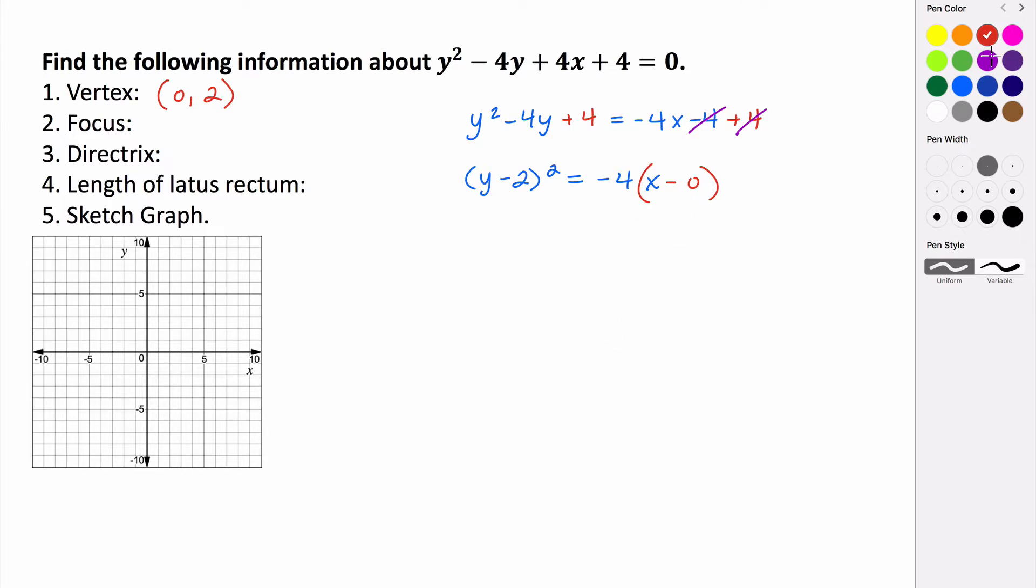The focus... So we know that the focus is just a units away from our vertex. And we know that this value here is equal to 4 times a. So negative 4 is equal to 4 times a. Divide both sides by 4. And so we get that the value of a is negative 1.